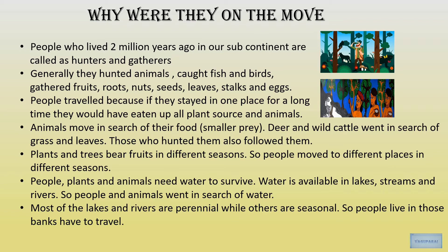Plants and trees bear fruits in different seasons, so depending on the season people moved from one place to another. People, plants and animals also need water to survive. Water available in lakes, streams and rivers was used. Most rivers and lakes were perennial — providing water throughout the year — while others were seasonal, only having water during the rainy season. So people living near seasonal lakes had to travel to where water was available.